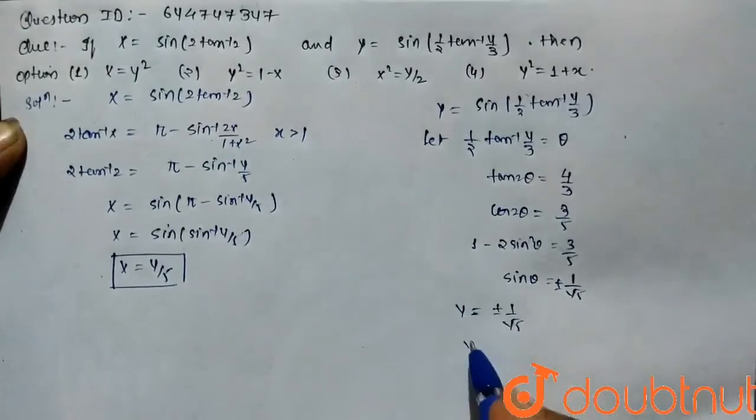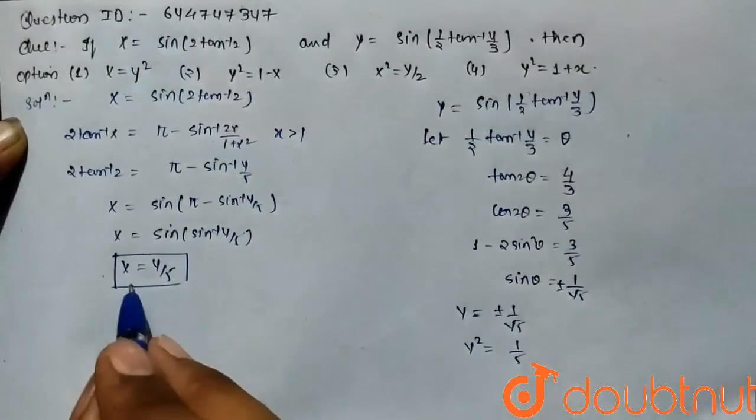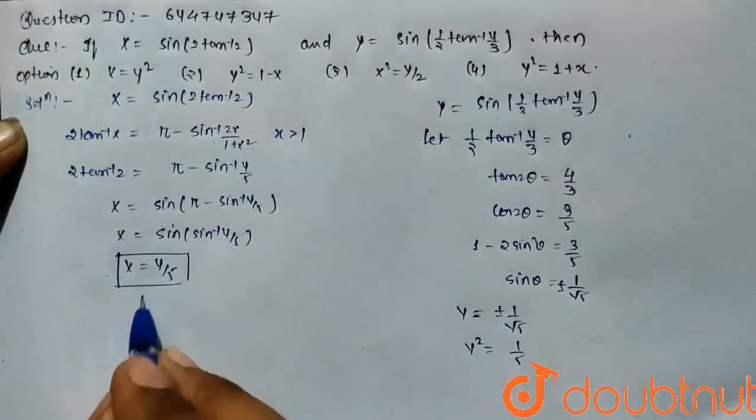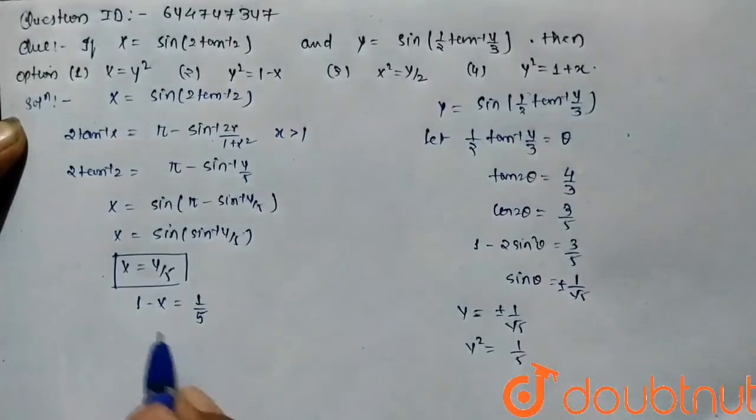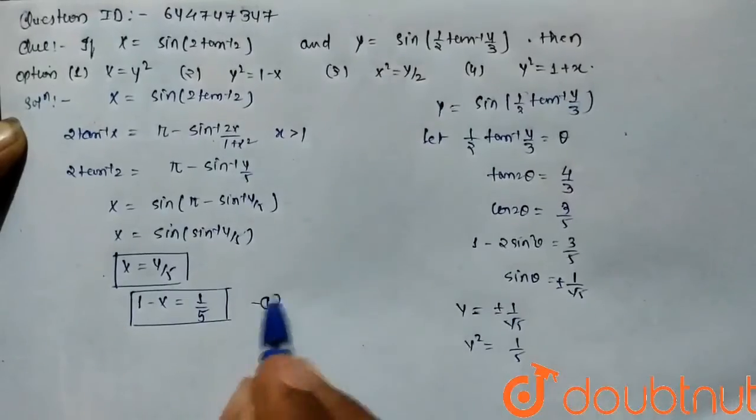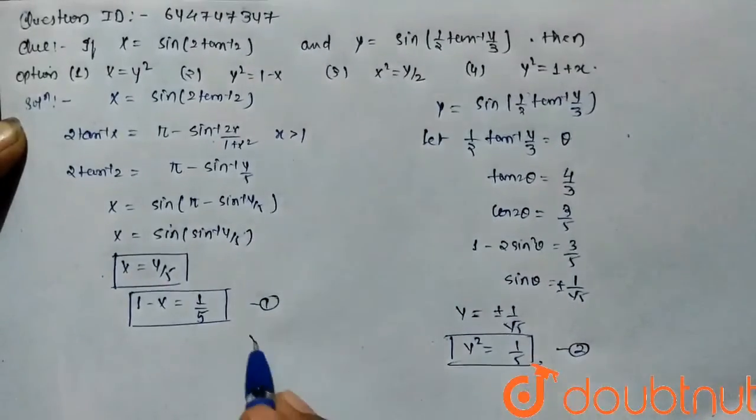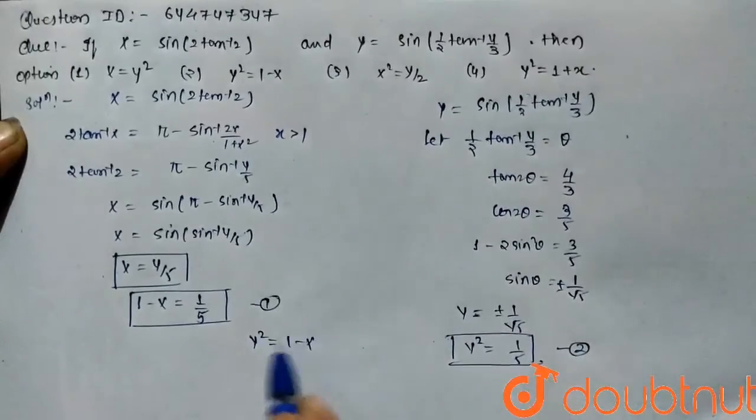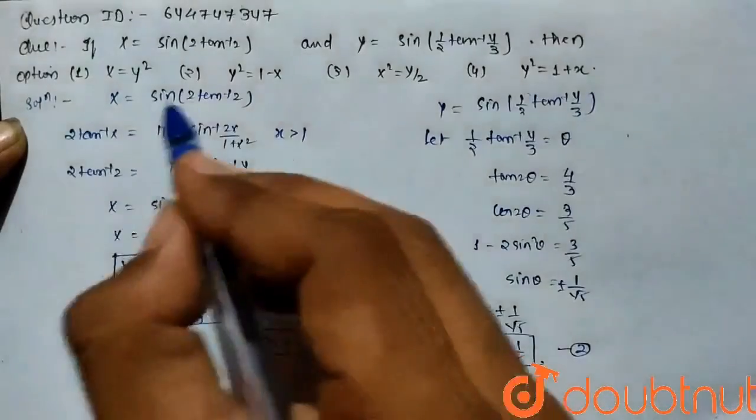On squaring y, it becomes y square equals 1 by 5. And here for x, we can write 1 minus x equals 1 by 5. So here equation first and equation second are equal, it means the value of y square equals 1 minus x is our required answer. So option 2 is correct.